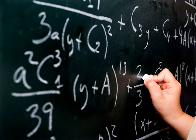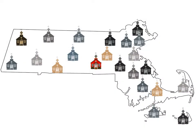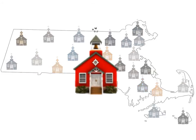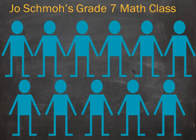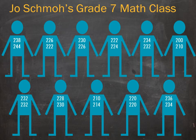Here is how the SGP is calculated. Let's look at one school in Massachusetts. Within that school, focus on one class — Joe Schmoe's 7th grade math class. Each student in this class has MCAS scores in math from the previous two years, grades 5 and 6.